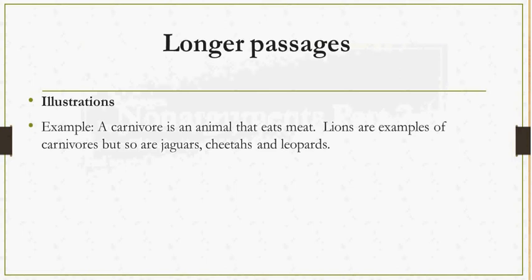Here's an example. A carnivore is an animal that eats meat. Lions are examples of carnivores, but so are jaguars, cheetahs, and leopards. So here it is clear that we have a statement — that a carnivore is an animal that eats meat — and then the other statements just give us several examples of a carnivore, which is basically what is meant here by illustrating that a carnivore is an animal that eats meat.